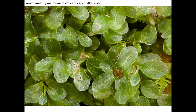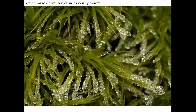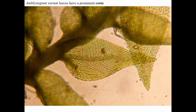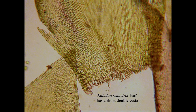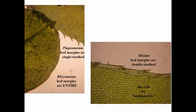Let's take a look at some pictures showing variation in mosses. Here's a moss with very, very broad leaves; here's one with very narrow leaves. This moss has a prominent costa — that nerve in the center of the leaf, tempting to call it a mid-vein, but it's not a vascular plant. Here's one where the costa extends all the way past the leaf tip as a sharp point. The costa of this moss is short and double. Leaf margins can be entire, have single teeth, or rarely, double teeth.